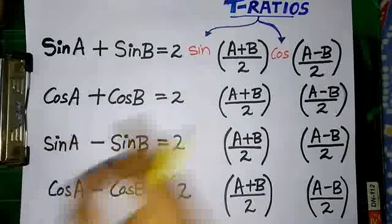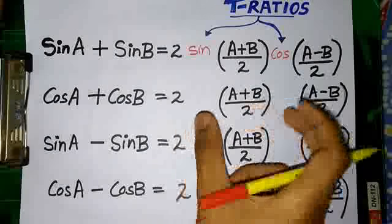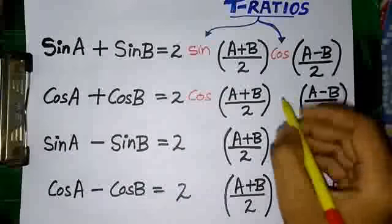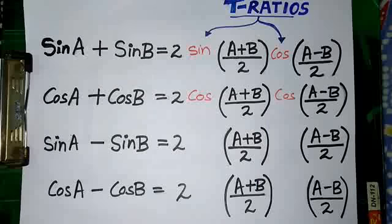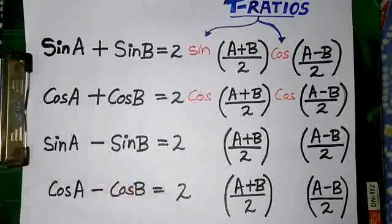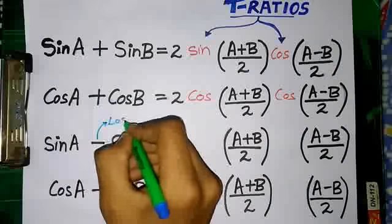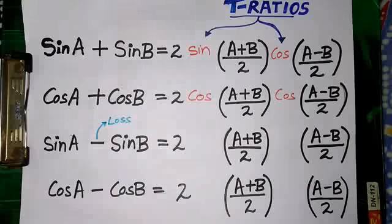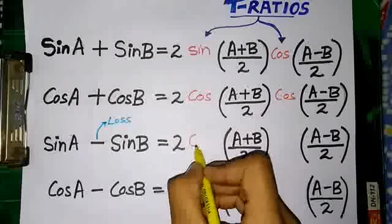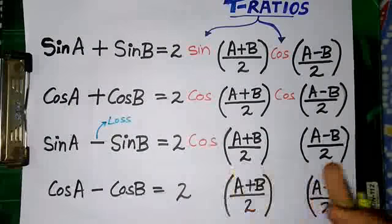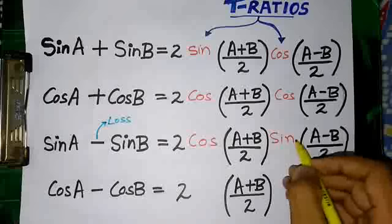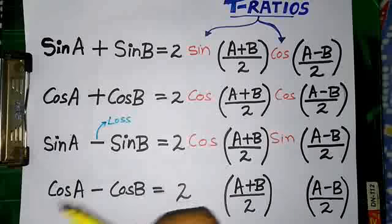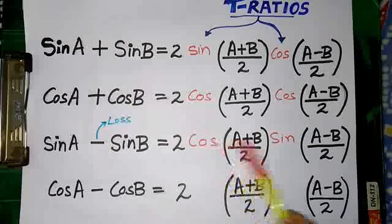Whereas in the case of cosA + cosB, cos is bad, so it's going to take both parts and not give anything to sine. So we have cosA + cosB = 2·cos((A+B)/2)·cos((A-B)/2). Now when we see sinA - sinB, we take this negative sign as a loss. So sine is having a loss here, and cos will try to take the opportunity and simply take the first position of sine's formula. Cos knows that sine is having a loss, so he takes the opportunity — he takes the first position himself and gives the second one to sine.